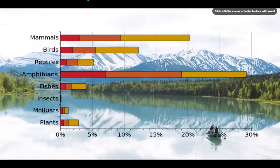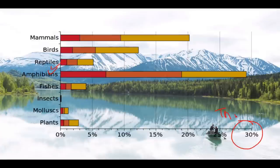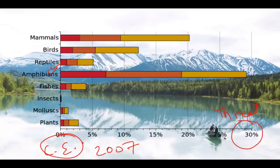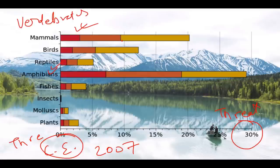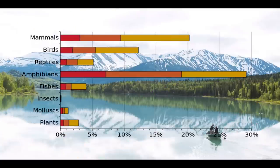Looking at a graph from 2007, most of the threatened species are amphibians, which account for almost 30 percent of all threatened species. A similar pattern is seen for critically endangered, endangered, and vulnerable categories — most are mammals and amphibians, which are vertebrates. Overall, most threatened species are vertebrates. The red portion represents critically endangered, followed by threatened and vulnerable categories.